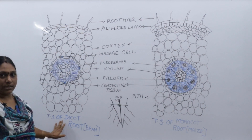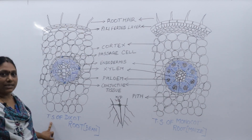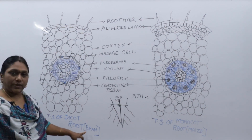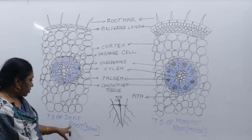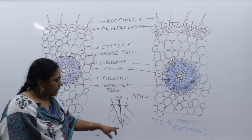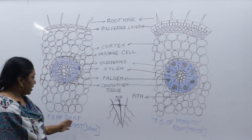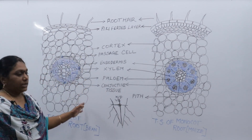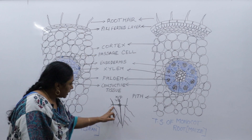TS means transverse section of root. For dicot root we are going to see beans as an example, and for monocot root we will see maize. First we will go in for seeing about dicot root.